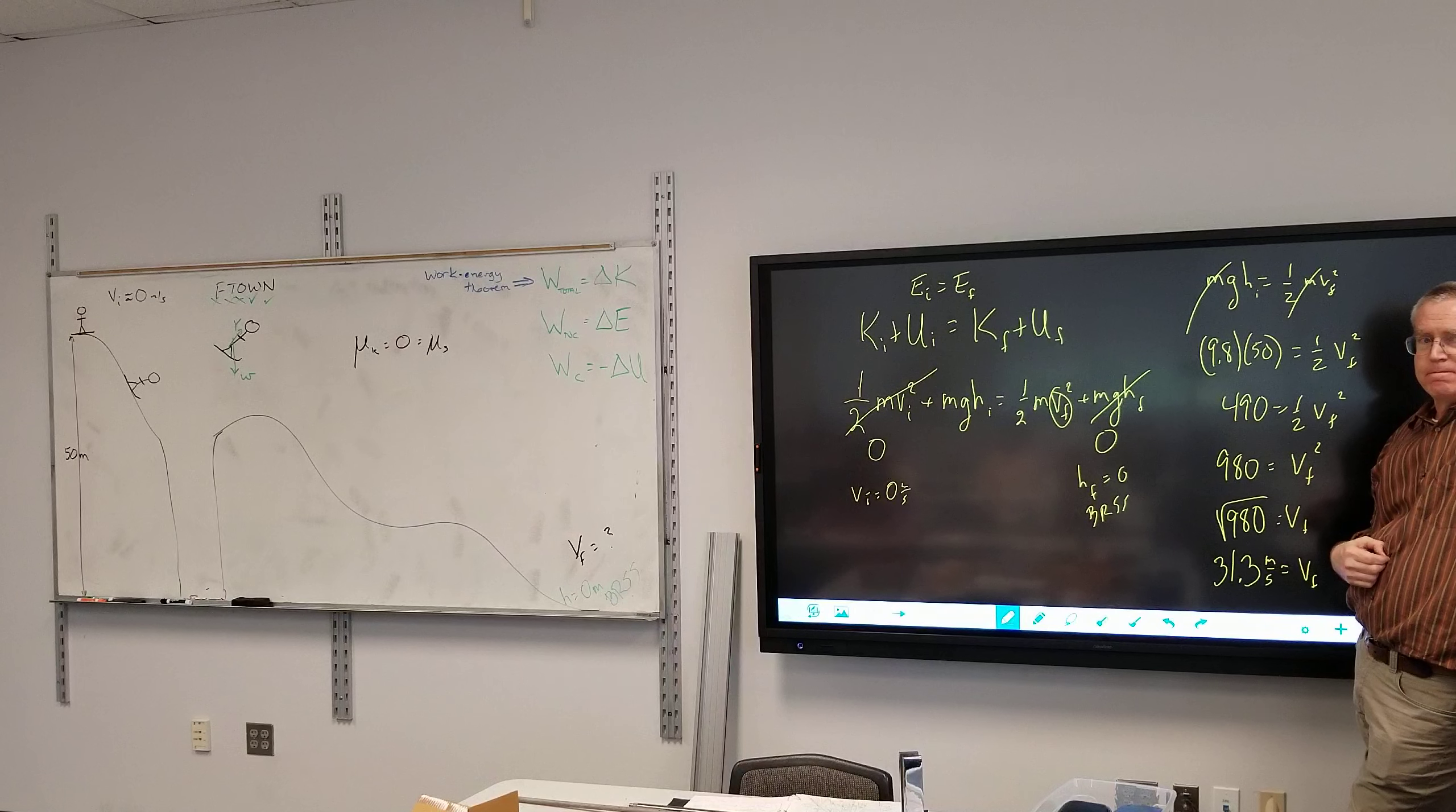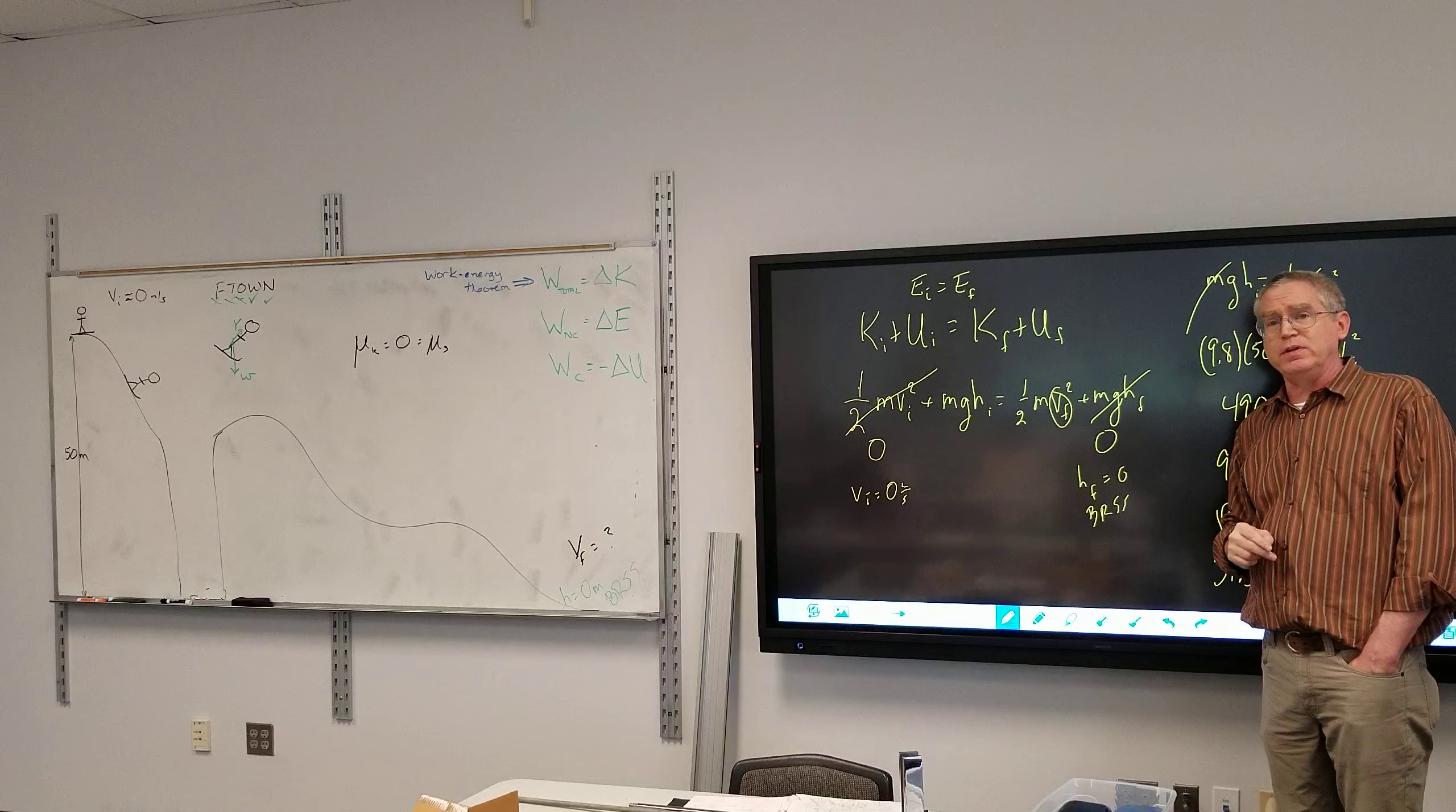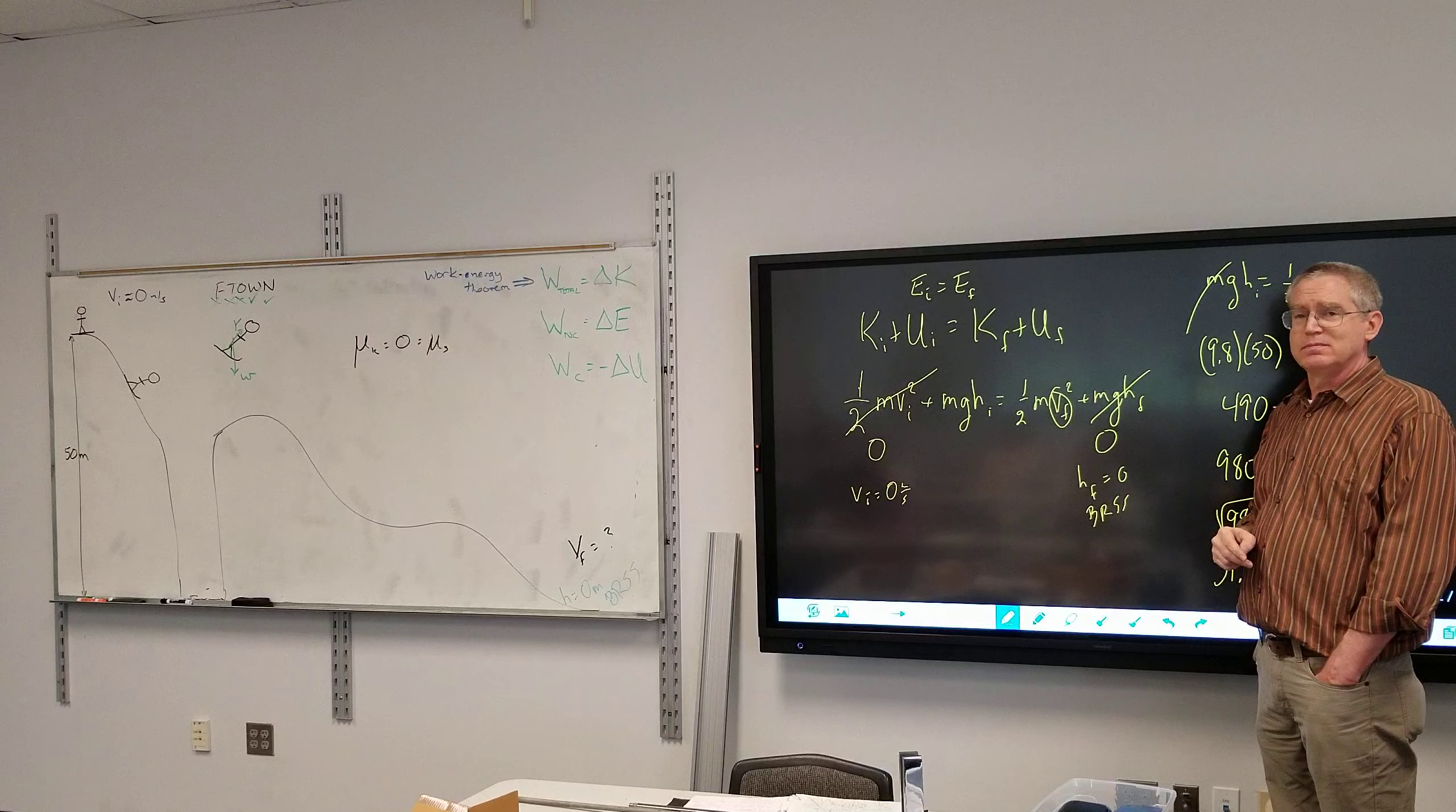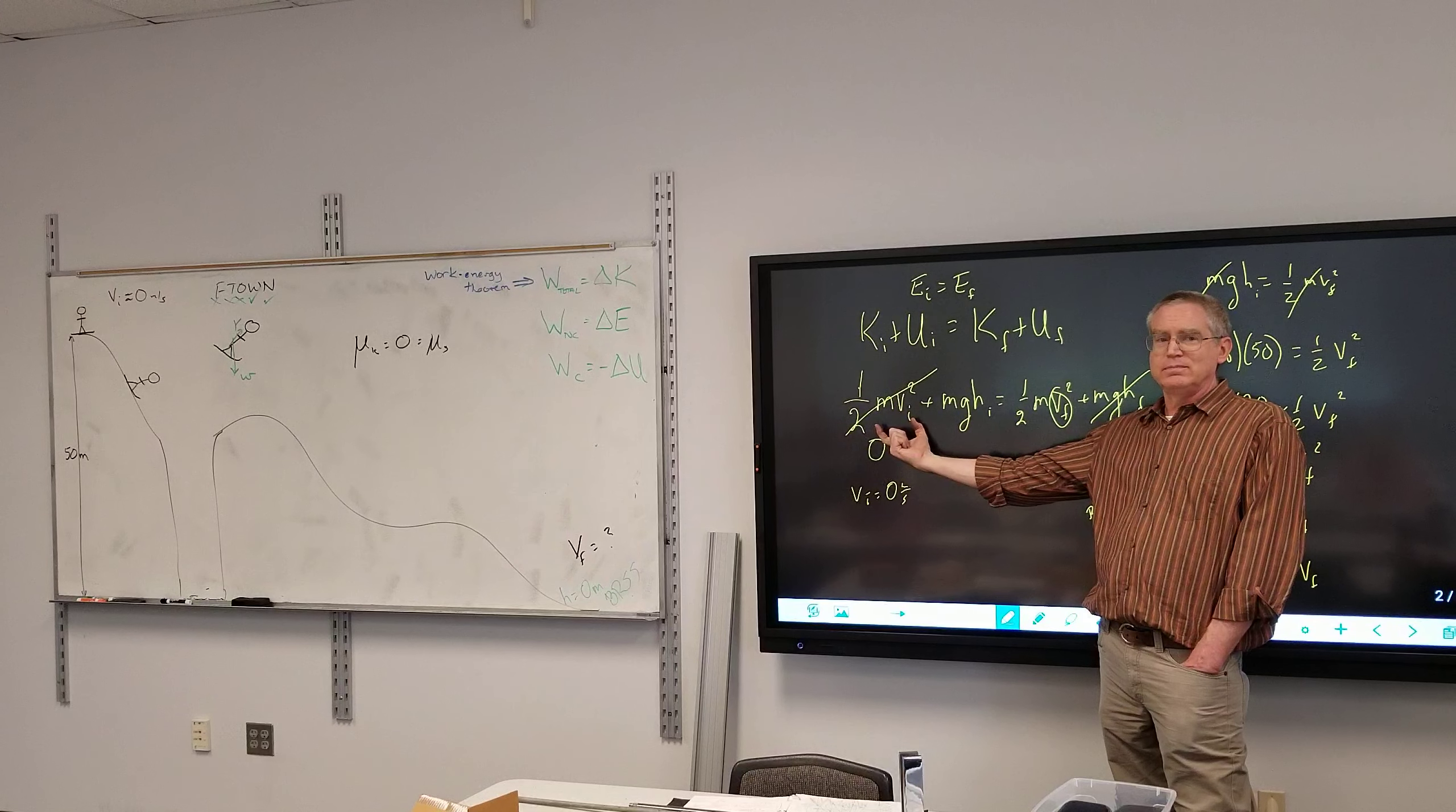Here the non-conservative work is zero because it's perpendicular to the motion. Here non-conservative work is zero because there is no non-conservative force. So as we go over here, so energy is conserved. What changes in the problem for how fast it's going at the bottom of the hole? What's different?